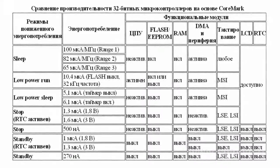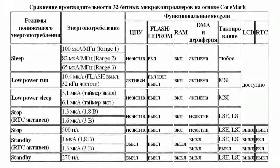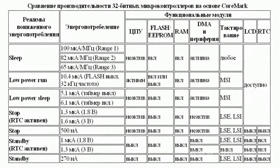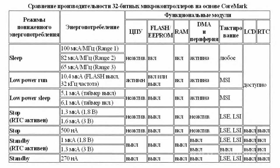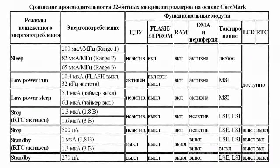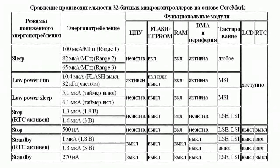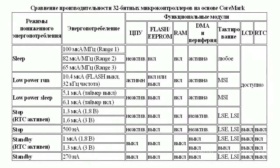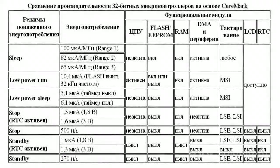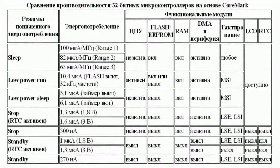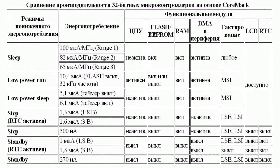Stop mode, with and without active RTC, provides minimal energy consumption while register and RAM contents are kept. The microcontroller can exit this mode in 8 µs after the exit signal. In Standby mode, with and without active RTC, energy consumption is ultra-low — all power to core elements is stopped and microcontroller consumption does not exceed 270 nA. A device exits standby mode in 60 µs when the module is switched off.